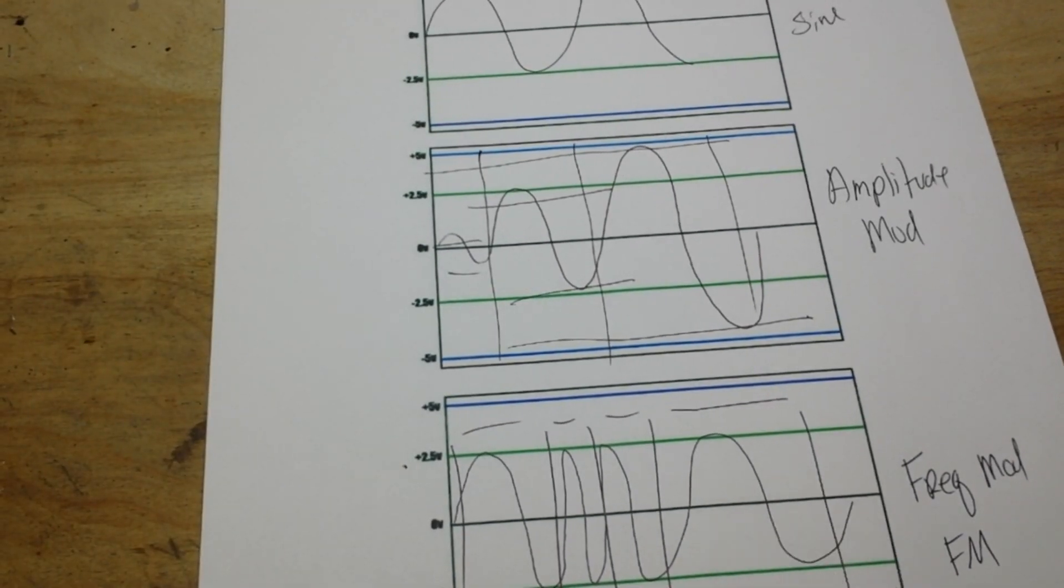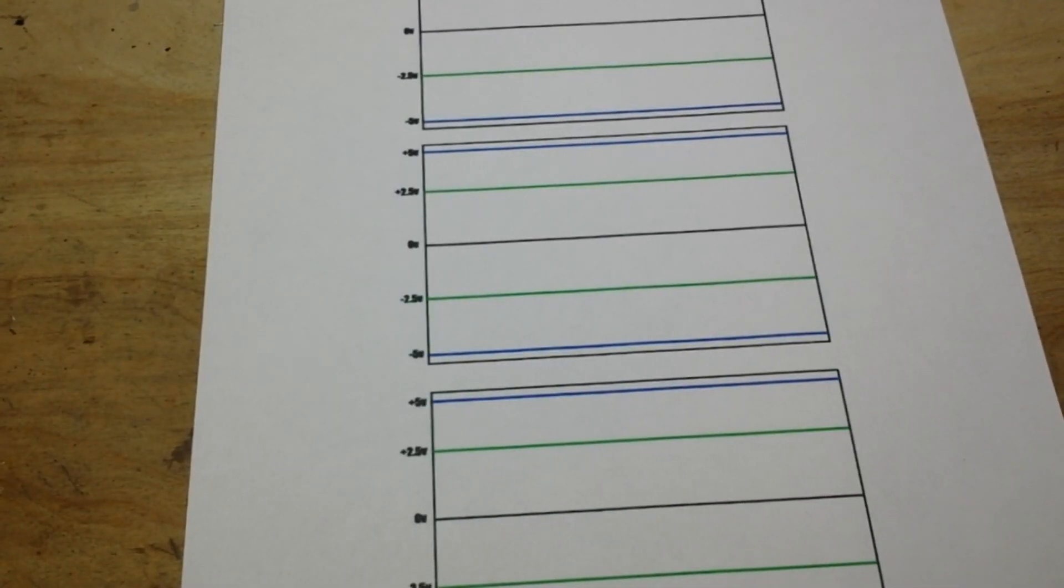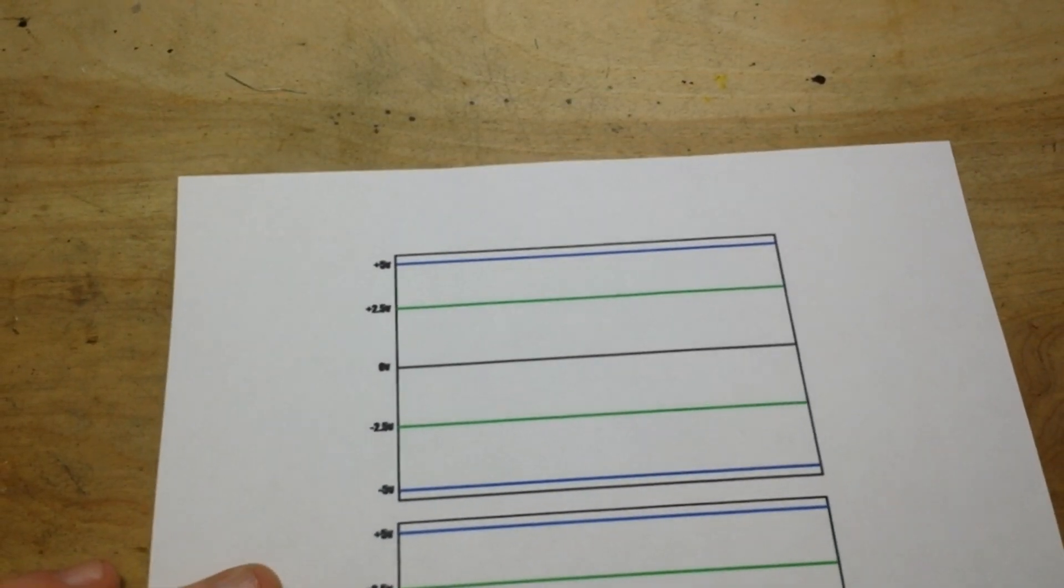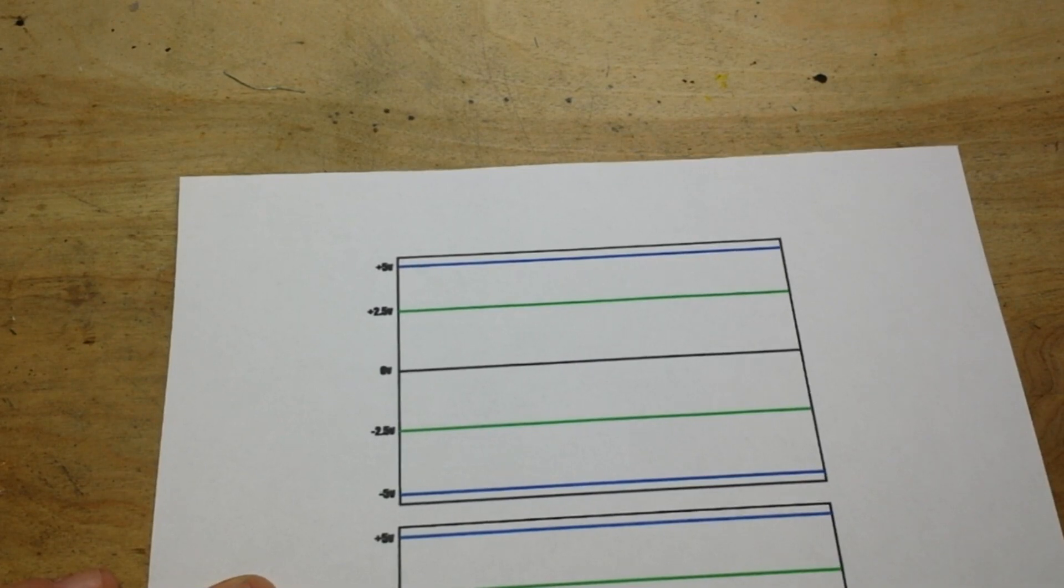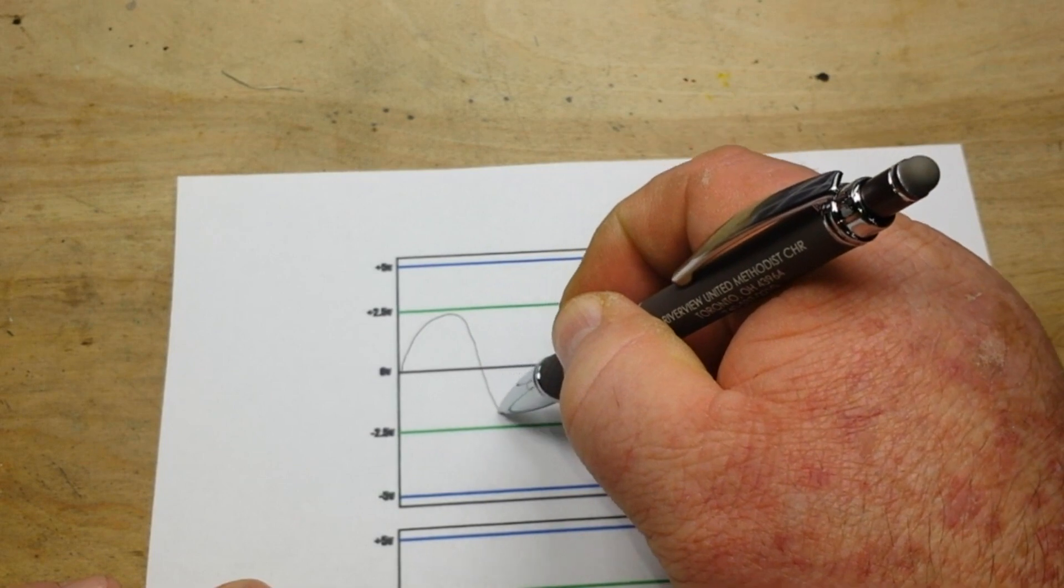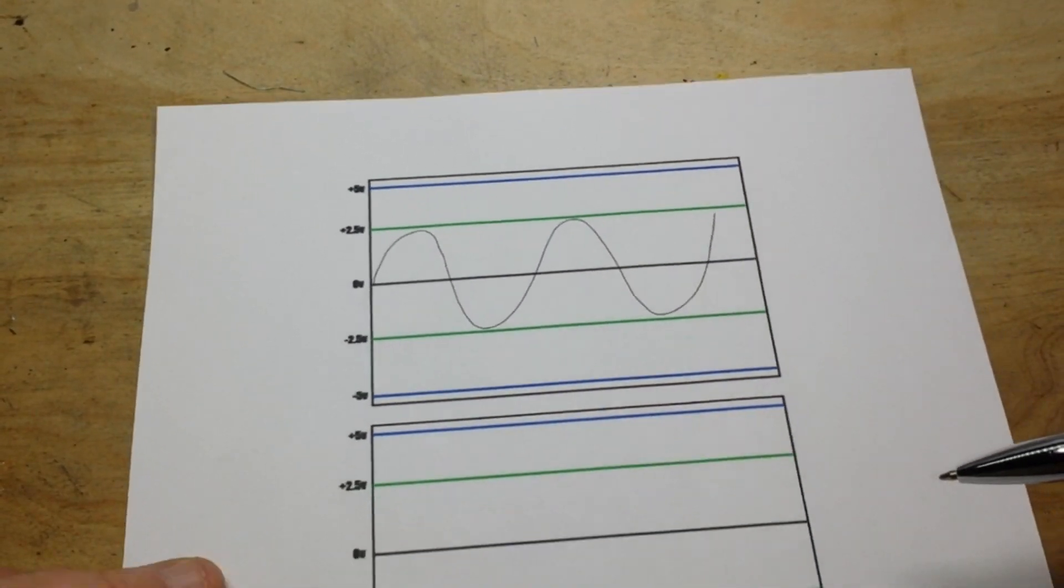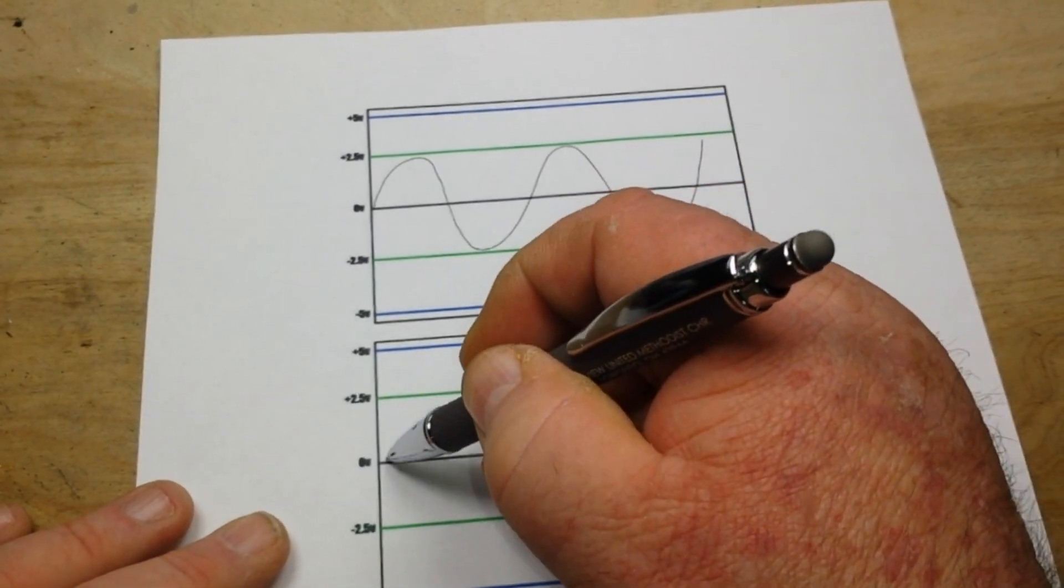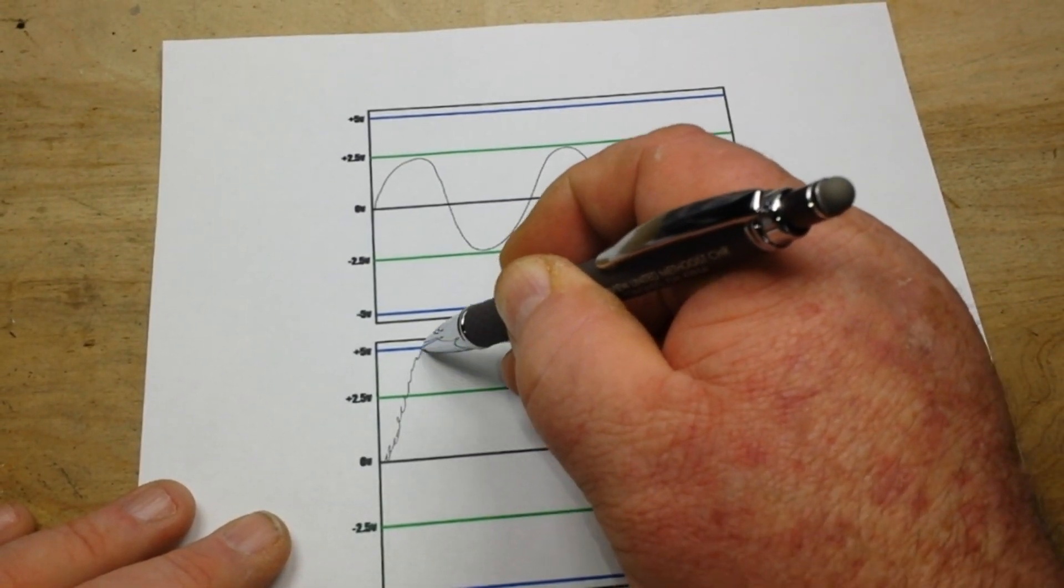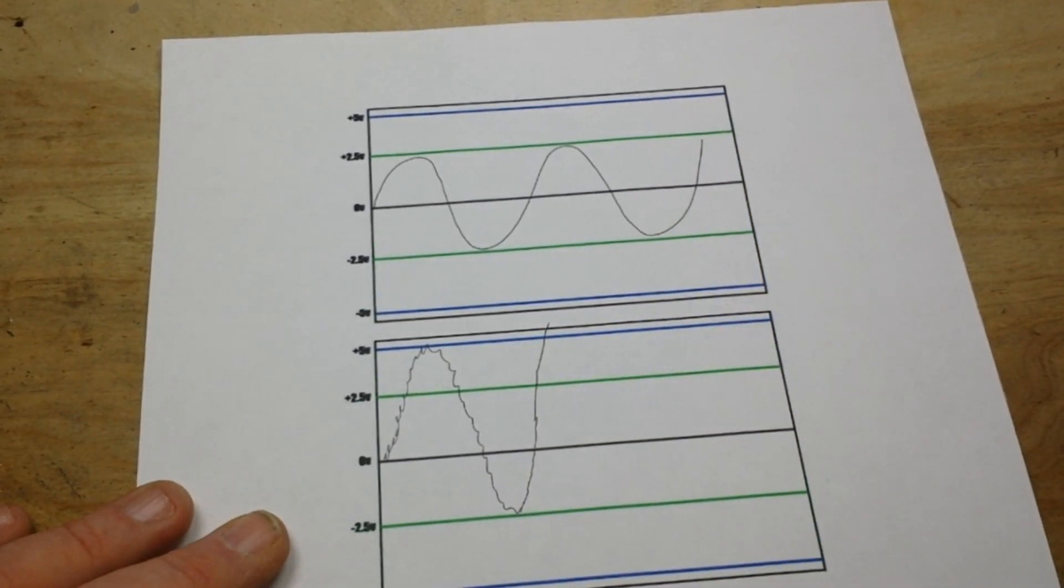And the last thing we can talk about is noise, which is the enemy to all signals and is a whole college course on its own called signal integrity, and we're not going to get into that. But just suffice it to say, if you have a nice clean sine wave, wave such as this, and then it starts to look more like this, now you've got noise.